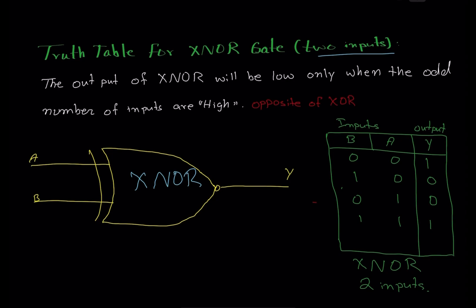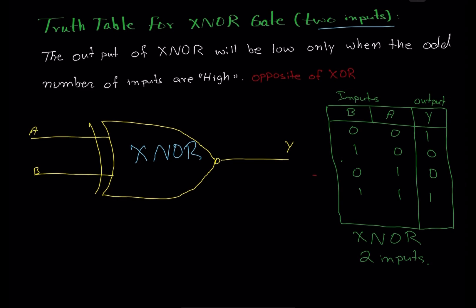The XNOR gate output will be high only when even numbers of inputs are on, or no inputs are high. The XOR gate output is high when odd numbers of inputs are high, so XOR is high in certain rows — XNOR is exactly opposite. If input A is zero and input B is one the output is low; if input A is one and input B is zero the output is still low; but if both inputs are high the output will be high.